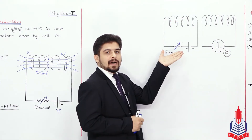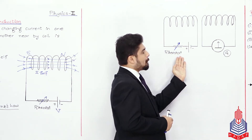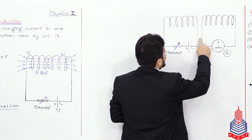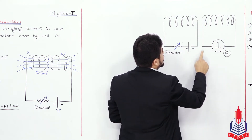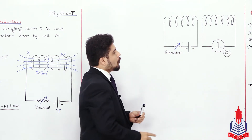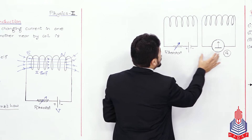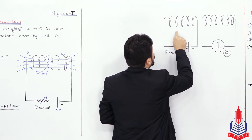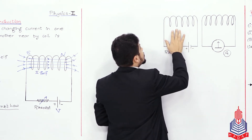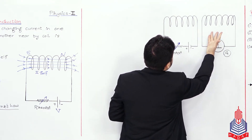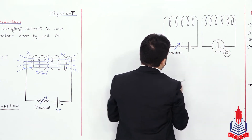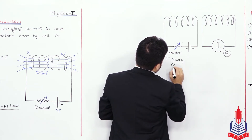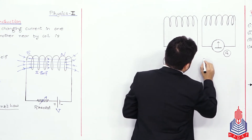Now, dear students, as you can see, हमारे पास यहाँ पर दो coils हैं। One is this one, जो कि आप self-induction में देख चुके हो। अब मैंने उसके साथ एक दूसरा coil भी रख दिया। आपको साफ नज़र आ रहा है कि दोनों का आपस में किसी भी तरह का physical contact नहीं है — मतलब एक दूसरे से insulated हैं। एक coil को मैं कहूंगा primary coil और दूसरे को secondary coil।